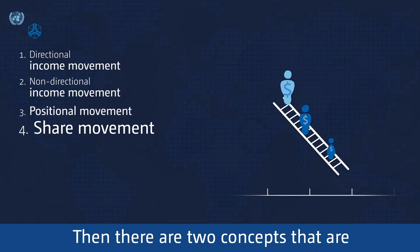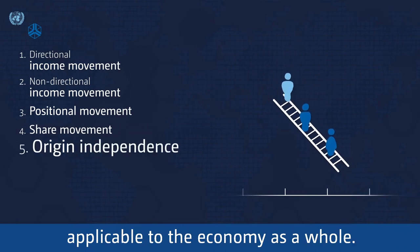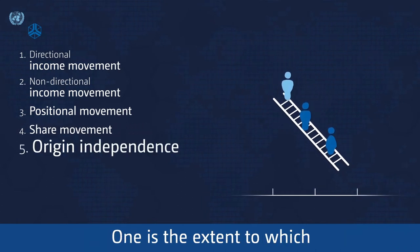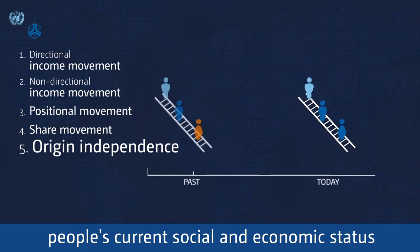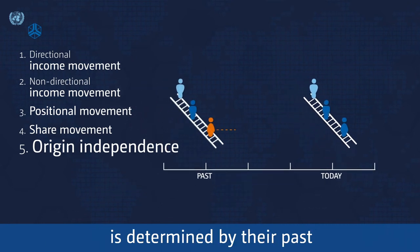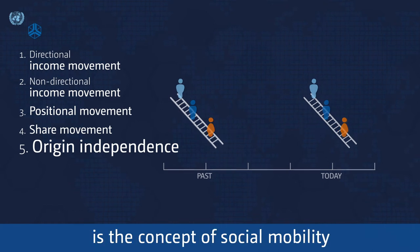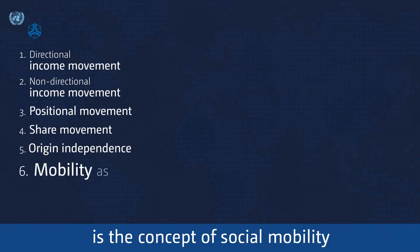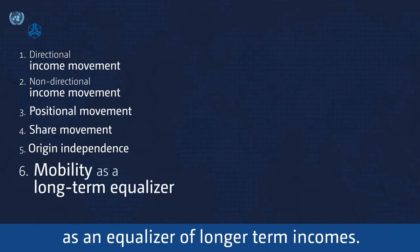Then there are two concepts applicable to the economy as a whole. One is the extent to which people's current social and economic status is determined by their past, or parents, or others who preceded them. The sixth and final one is the concept of social mobility as an equalizer of longer-term incomes.